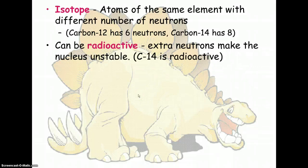The reason why we talk about it in biology is because certain isotopes can be radioactive. What that basically means is that the extra neutrons cause the nucleus to be unstable and break down over time. Carbon 14 is a good example of a radioactive isotope. You may have heard of carbon dating.